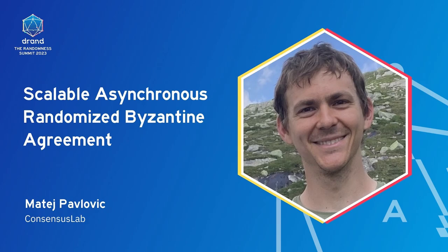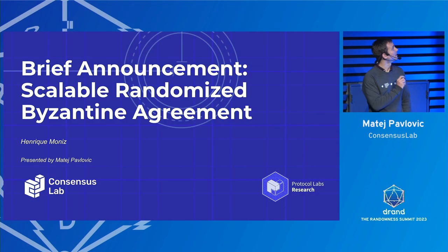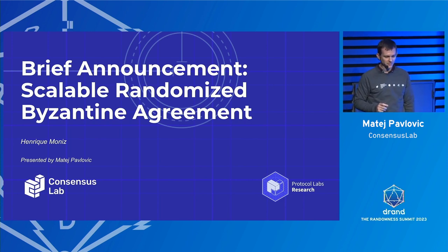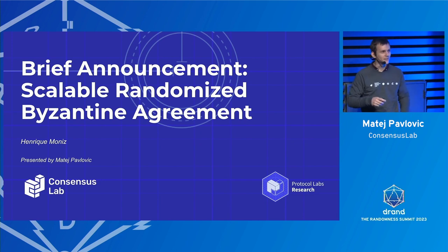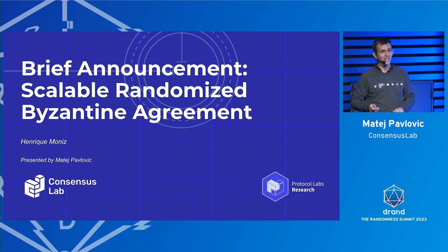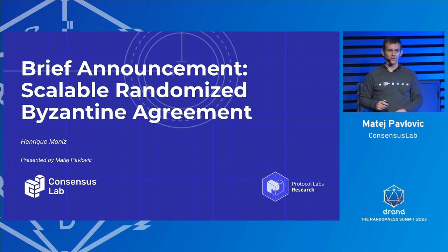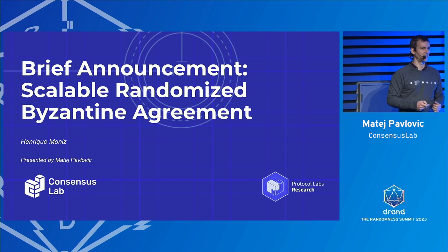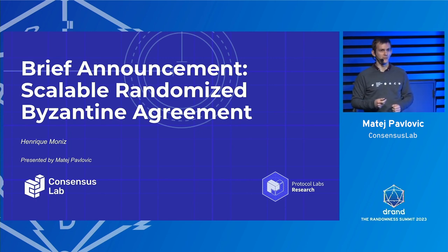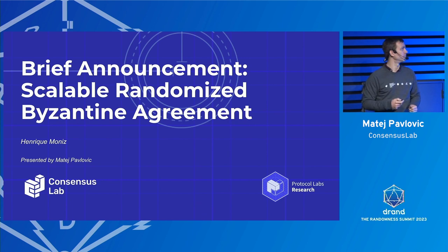Thank you very much. This is a brief announcement, which is good in the interest of time because we seem to be quite late on schedule. I will try to make it even more brief and relaxed, so it's not going to be very technical. It's just ideas that in Consensus Lab we had — mostly my colleague Henrik Moniz had. I'm presenting his work; he unfortunately couldn't come. So I'm here to present mostly his ideas on how to scale asynchronous randomized Byzantine agreement.